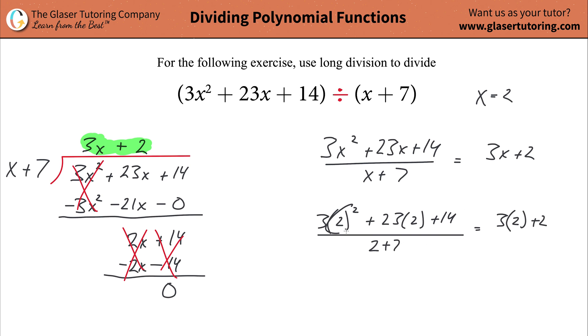Start doing the math. 2 times 2 is 4, 4 times 3 is 12, plus 23 times 2 is 46, plus 14. All divided by 9 because of the 2 plus 7, and that better equal 6 plus 2, which is 8.